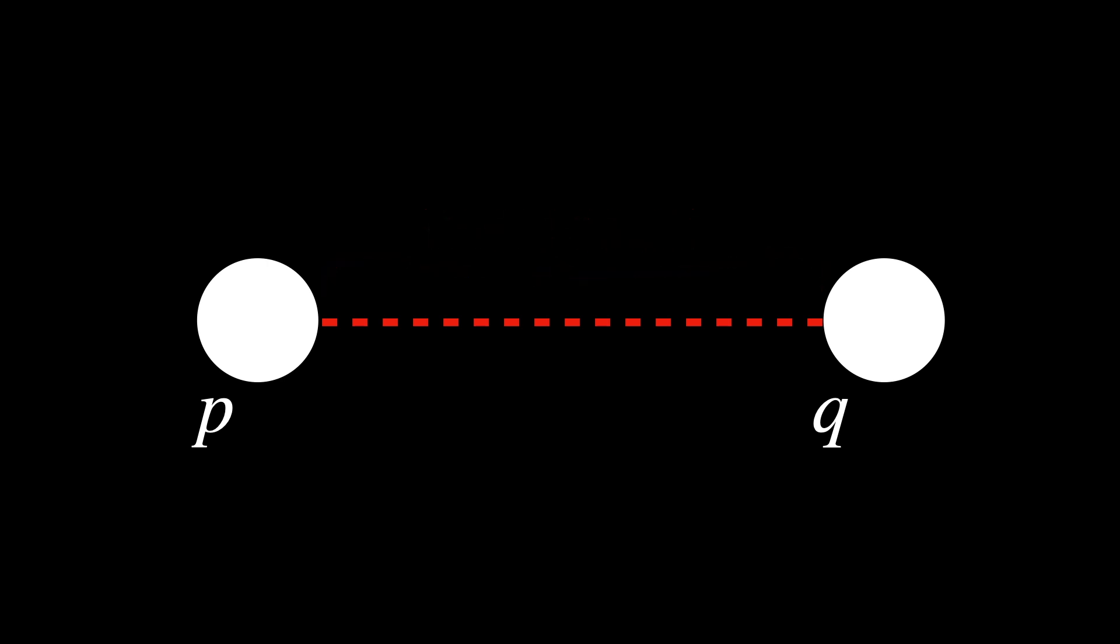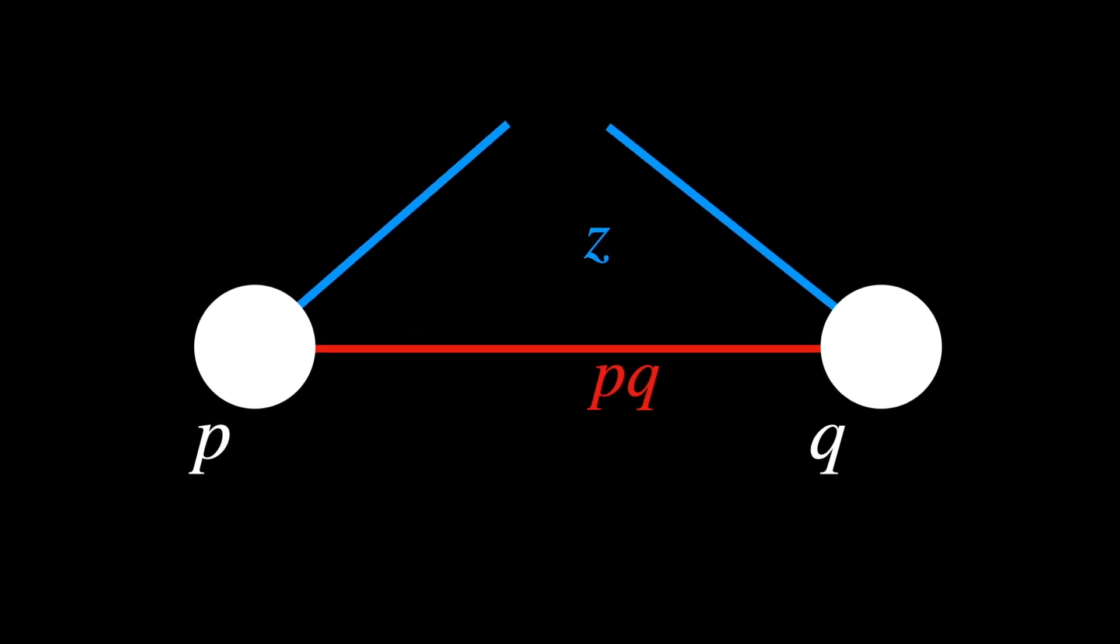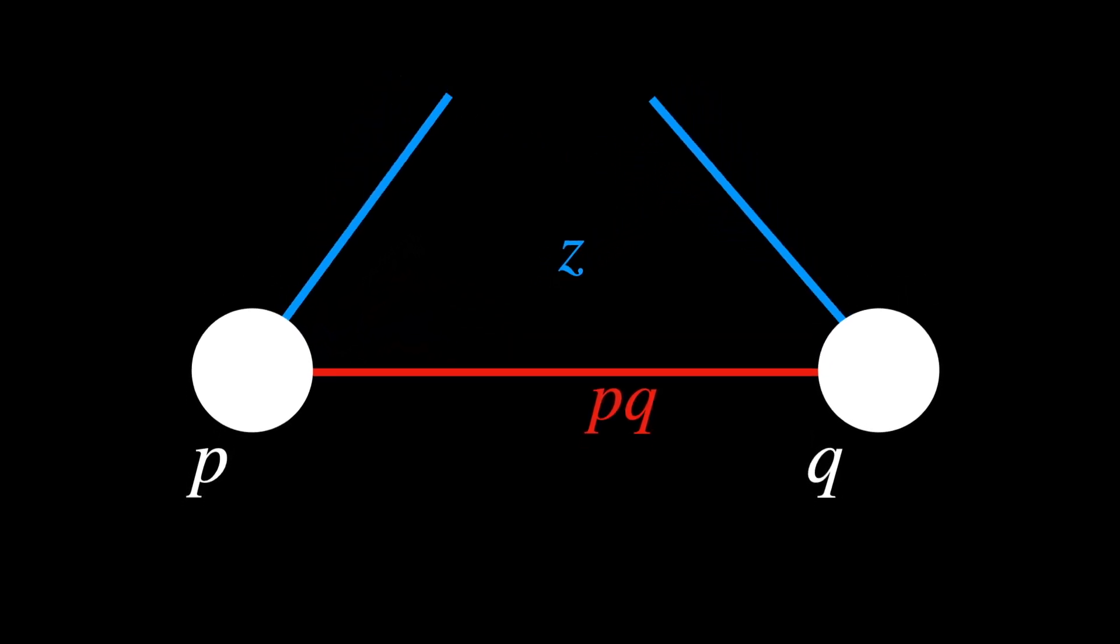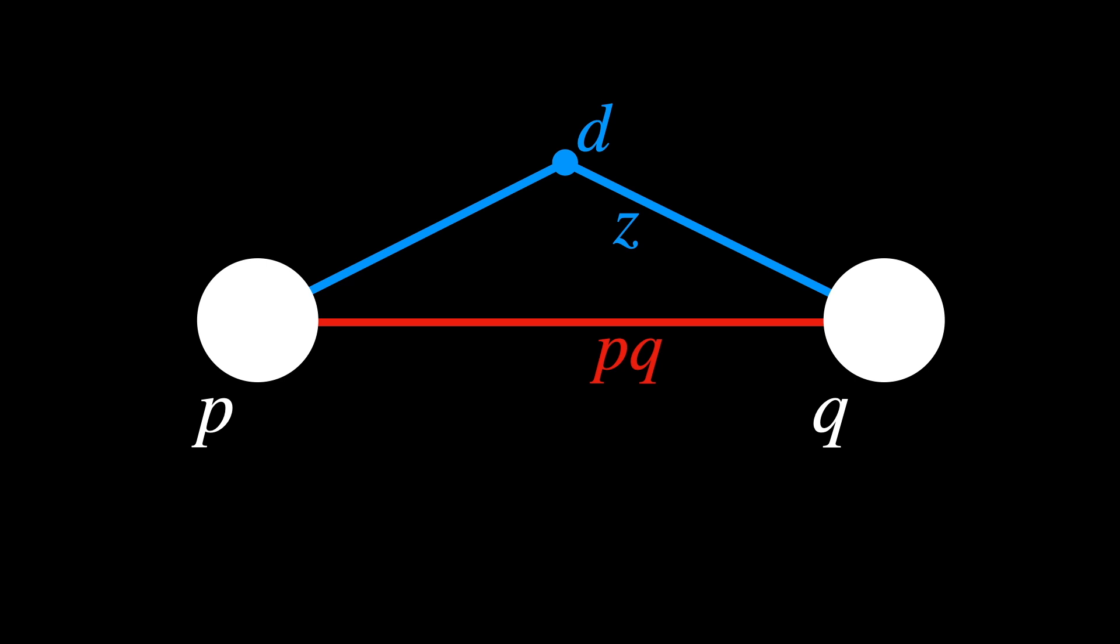But the line we draw has to be the shortest possible distance. Of course, the intuitive thing is the good old straight line. But how can we actually prove that this is true? Assume there exists a path other than the straight line PQ. This new path, Z, must at least consist of two segments that together form an angle at some point D along Z.